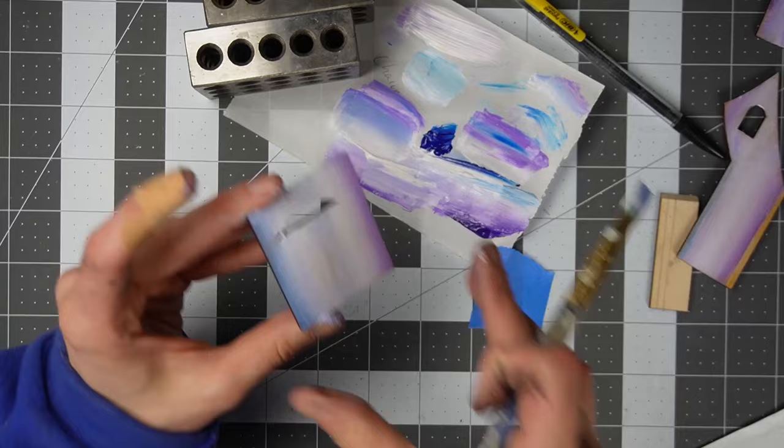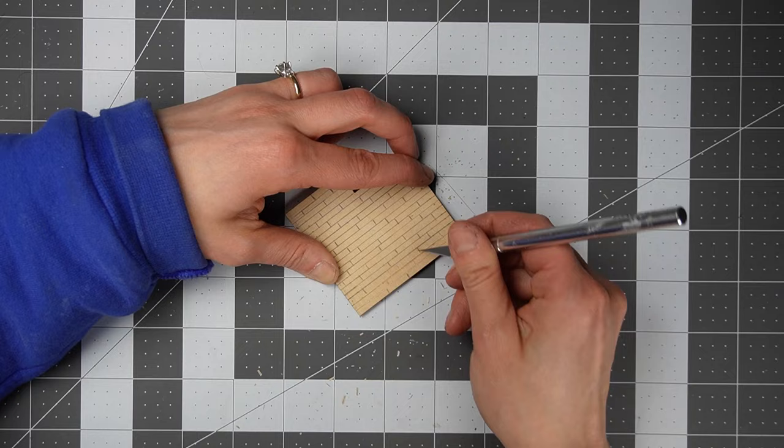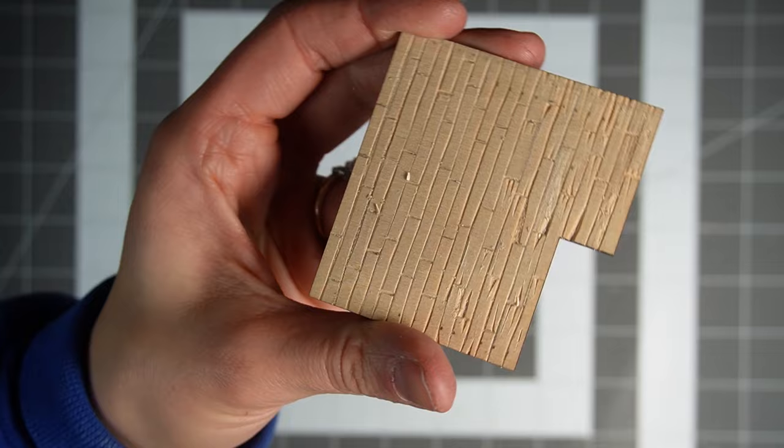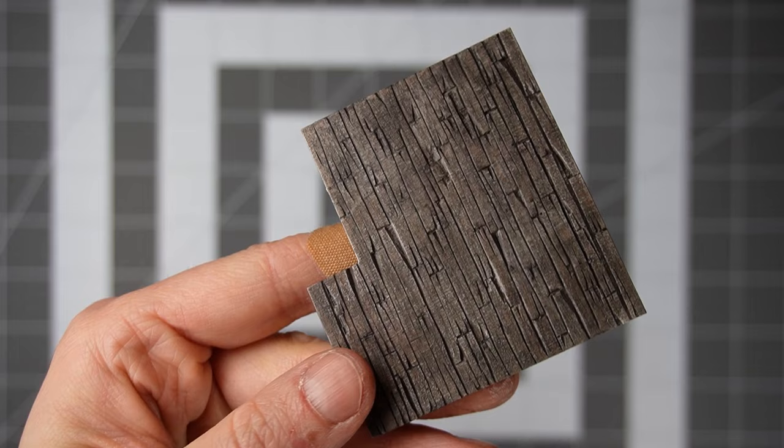While the walls are drying let's work on the floor. I'll make a video going into great detail about how to do this, but I'll keep this explanation brief. Essentially what I did for the floors was use an exacto knife to make a solid piece of wood look like individual boards. I stained it with watered down paint and sealed it with Mod Podge.